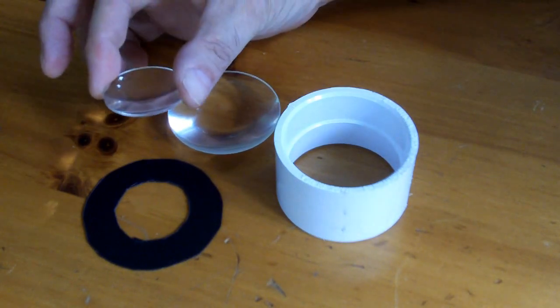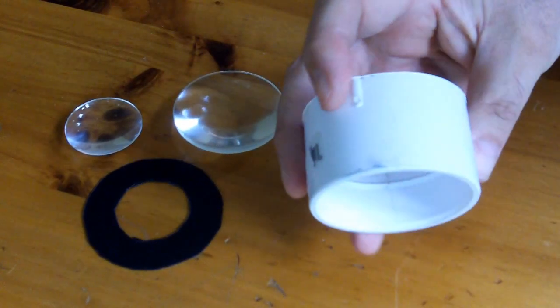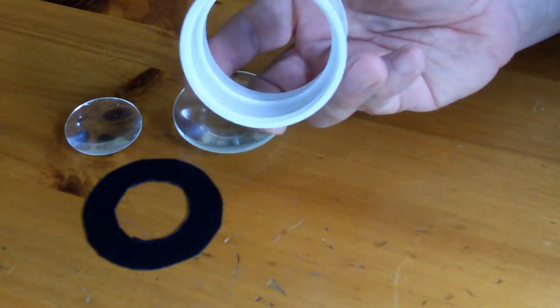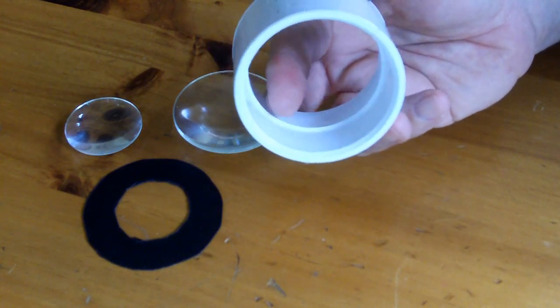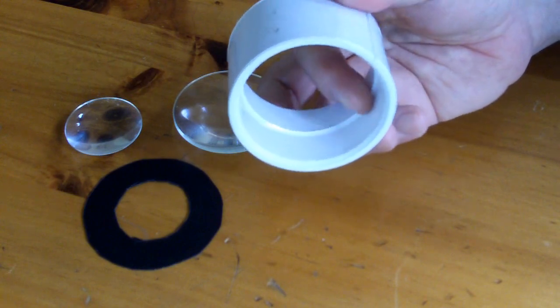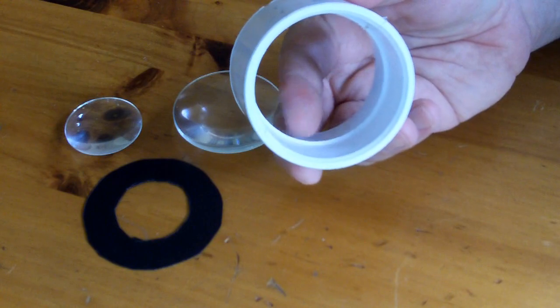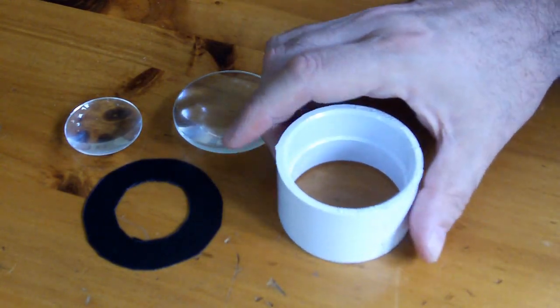The other two little tidbits I found that work quite well are a 2-inch PVC coupler. One of the nice things about this is halfway down the inside there's a nice little ridge, and we're going to use that to support one of the lenses. It also happens to be just about the right dimensions to do everything we need.